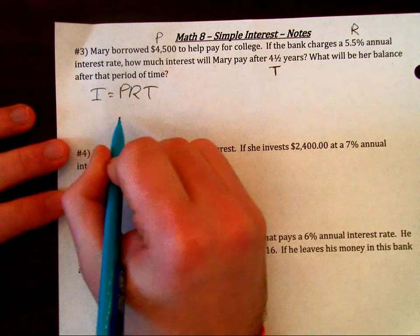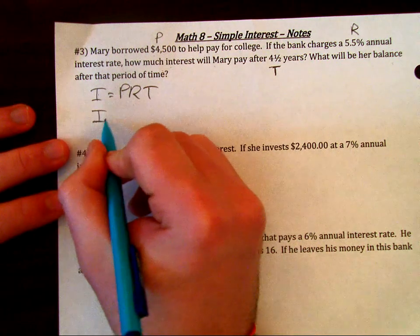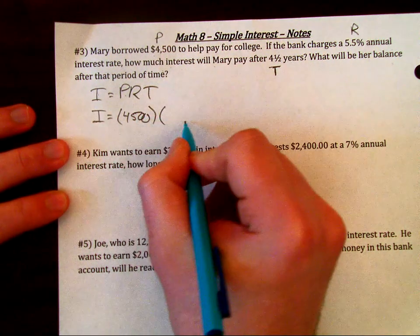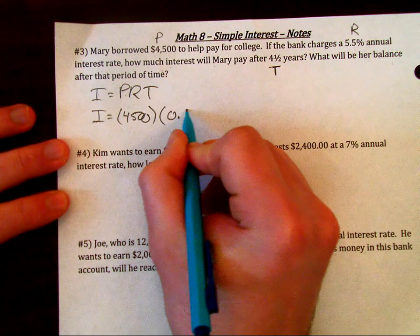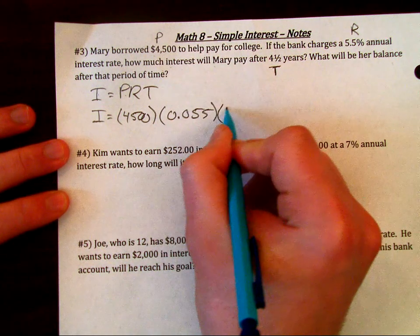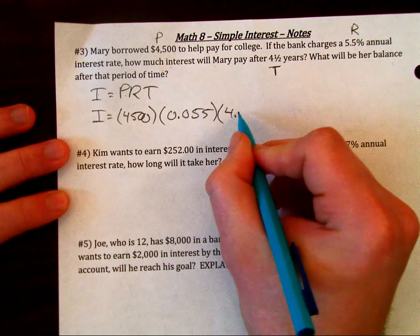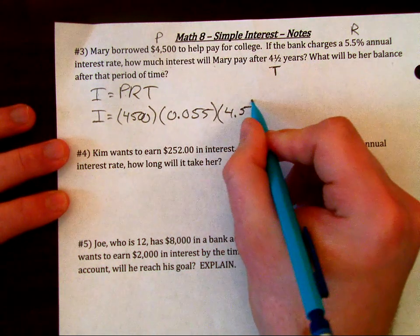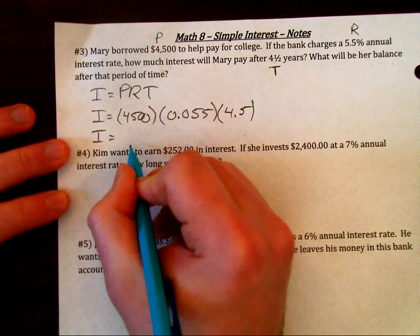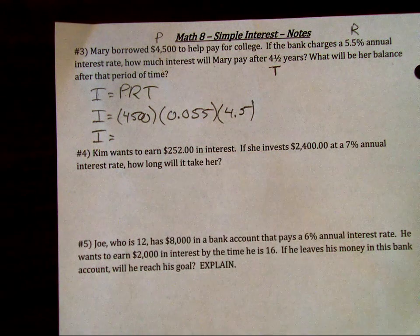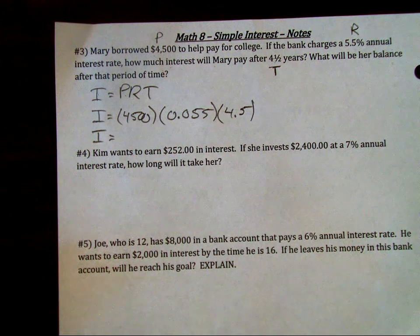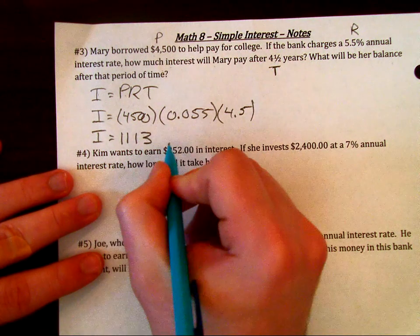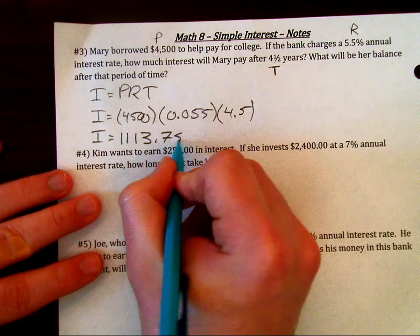We're going to say I equals P times R times T. I is going to be $4,500 times your decimal value 0.055 times 4.5 years. Multiplying those three numbers together, you're going to get $1,113.75. That's just our interest.